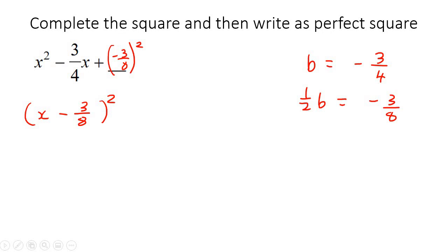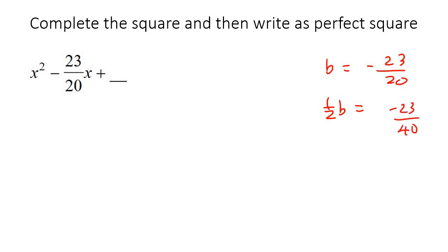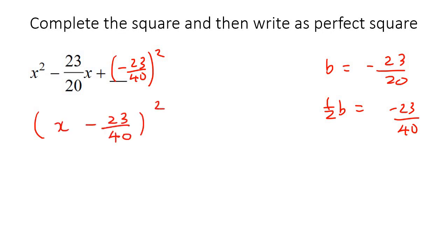Let's do another fraction one — we've got quite a few fraction ones, because these are the ones that learners struggle with the most. So here we have b equals negative 23 over 20. Half of that — to find half of a fraction, you actually just multiply the bottom by 2 — so that gives negative 23 over 40. We're going to put that in a bracket, negative 23 over 40 to the power of 2, then open up your bracket and say x take away 23 over 40 to the power of 2.